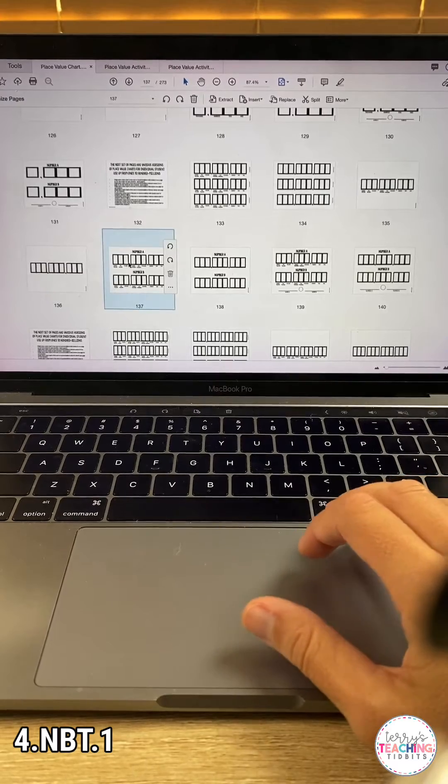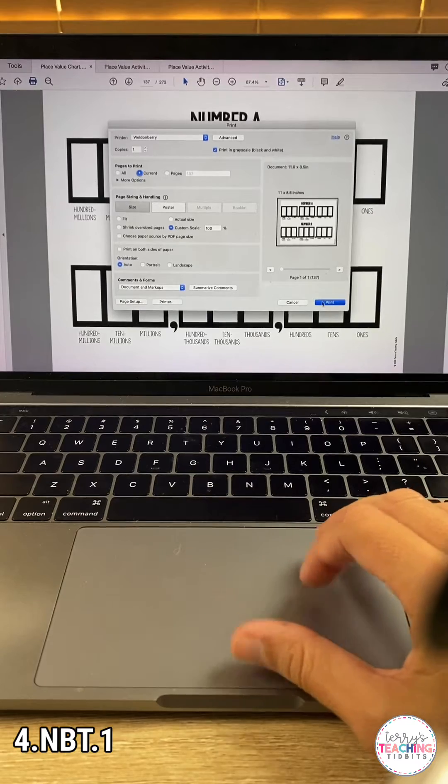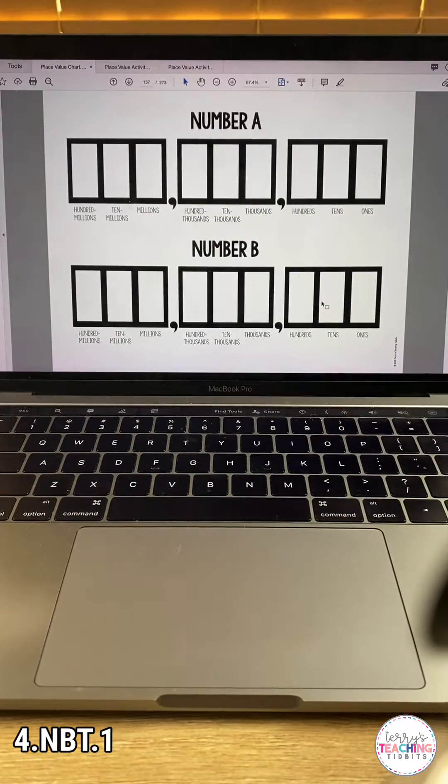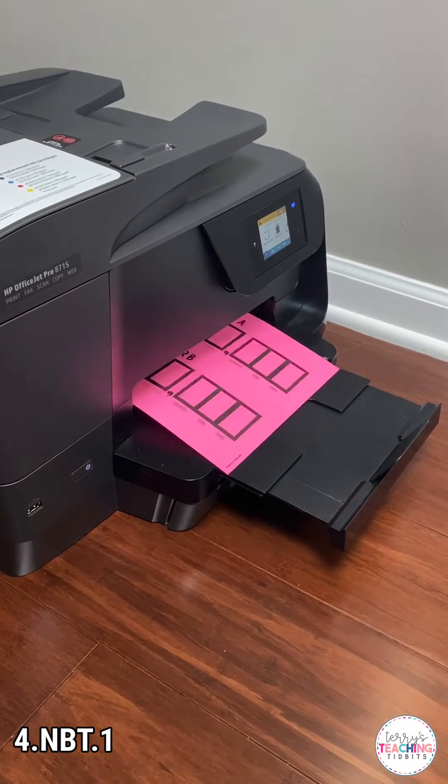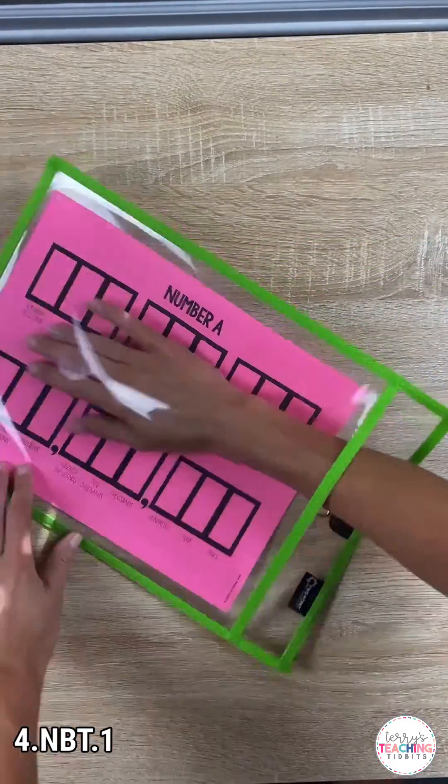First, select one of the double place value charts with whole numbers. I'm going to choose the one that has the place values listed underneath each place. Next, print it out onto bright colored paper. Then insert the place value chart into a dry erase pocket.